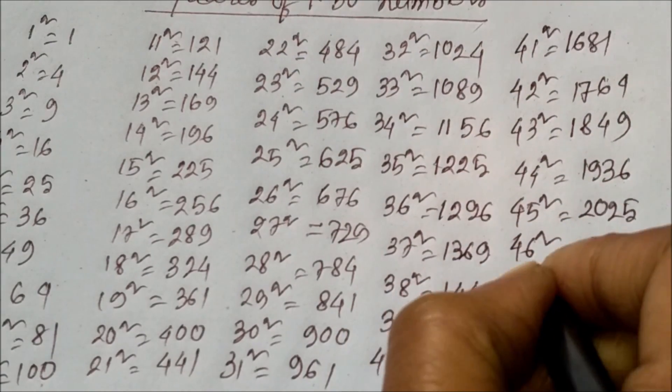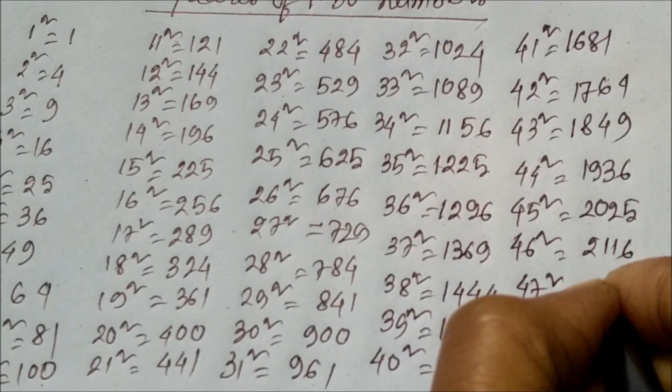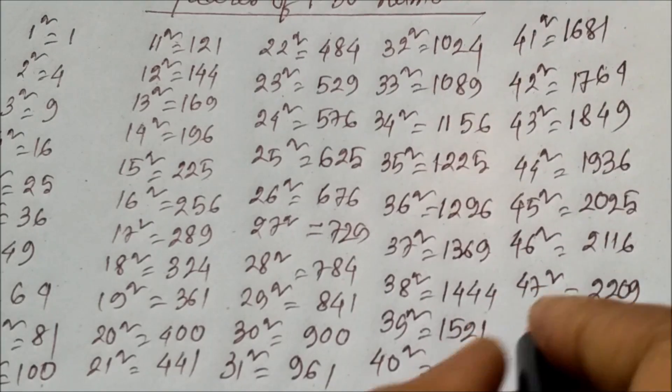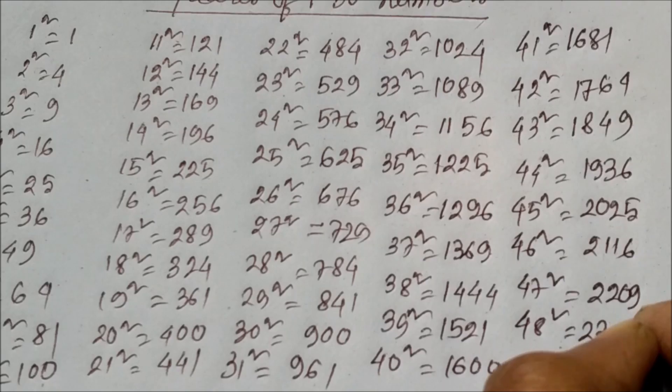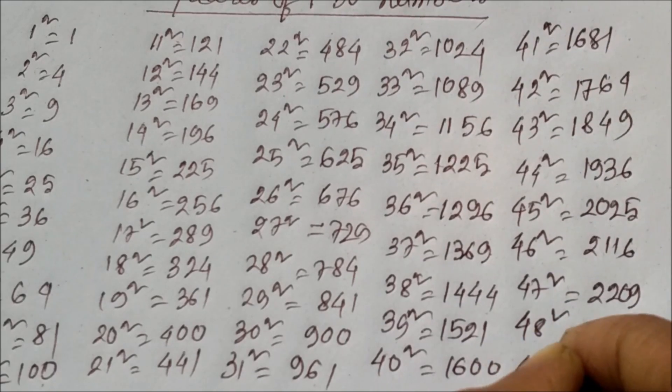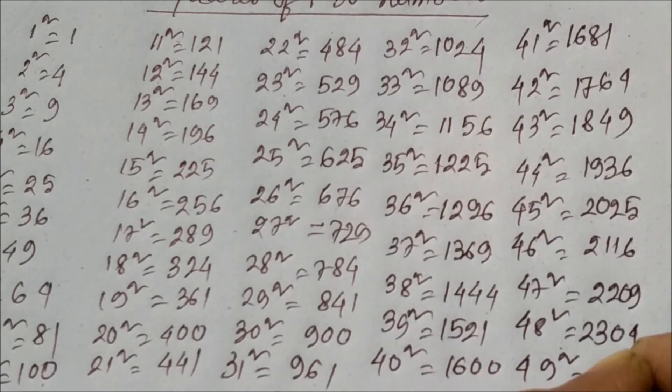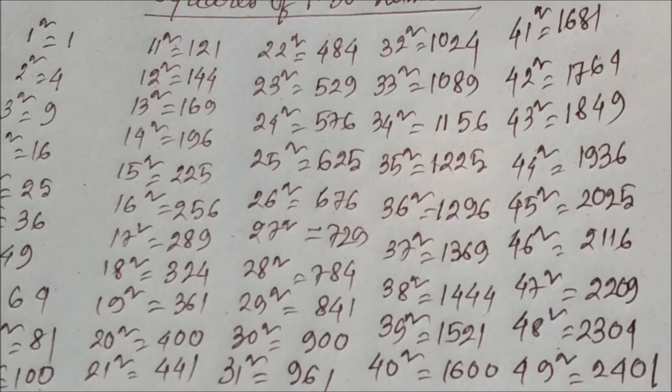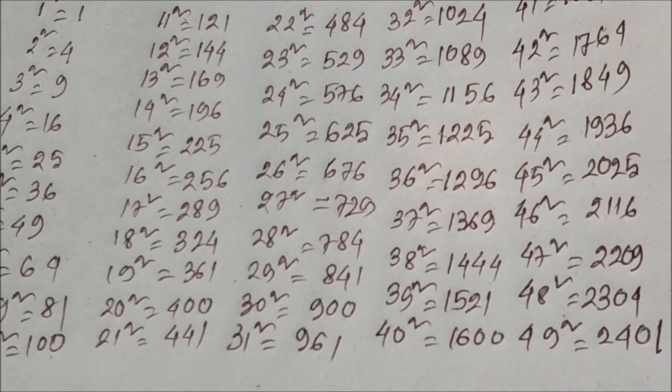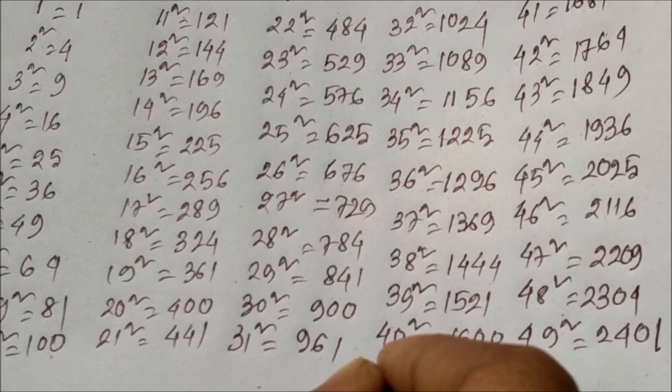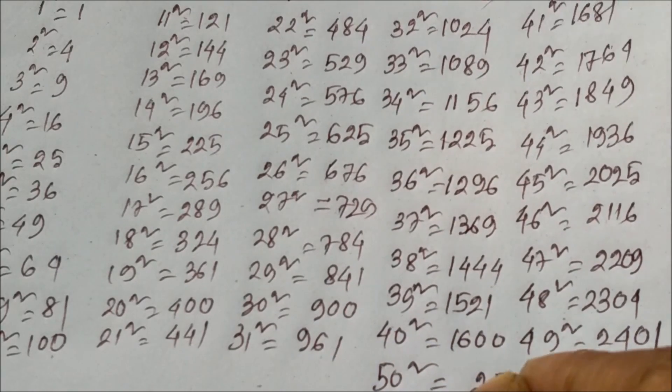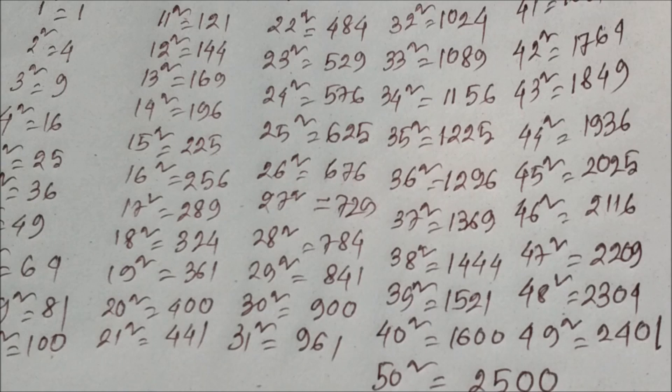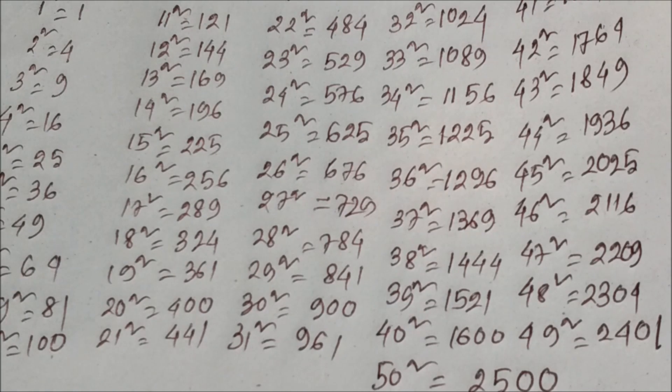47 square equals 2209, 48 square equals 2304, 49 square equals 2401, and the last 50 square equals 2500. These are the square of numbers from 1 to 50.